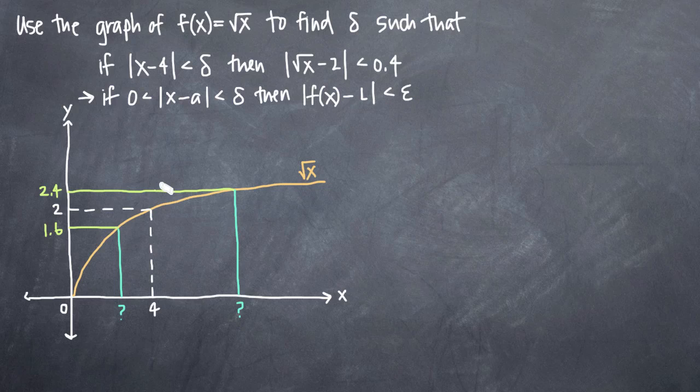With this problem, we've also been given the graph of our function y equals the square root of x, which we've drawn here in orange. And this graph is going to be really helpful to us because it's going to show us or give us a visual representation of what we're trying to find.